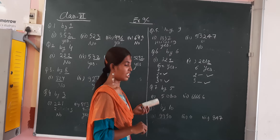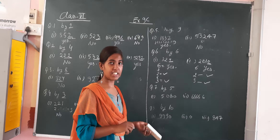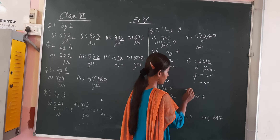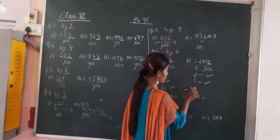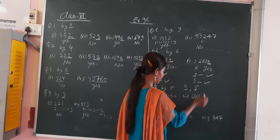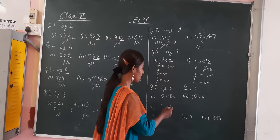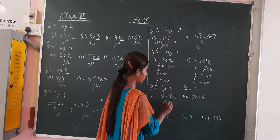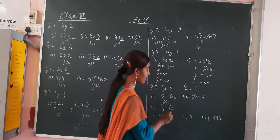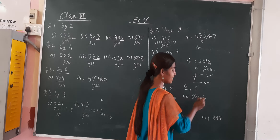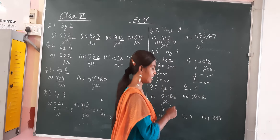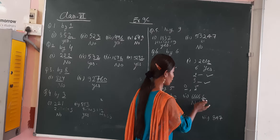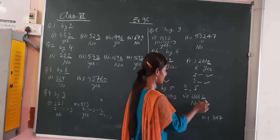Now, divisibility rule of 5. We already know that the divisibility rule of 5 is that the unit place digit should be 0 or 5. So here, the unit digit is 0 — yes, it is divisible. Here, the unit place digit is 6 — it is not divisible, because it is neither 5 nor 0.